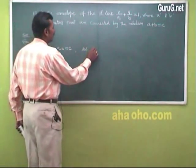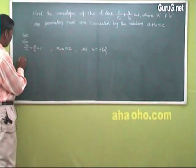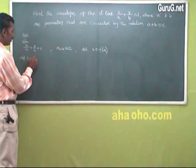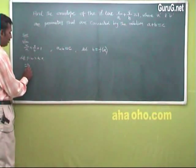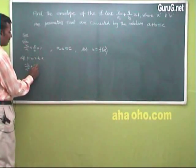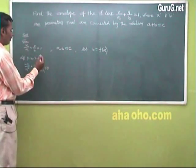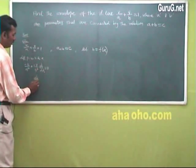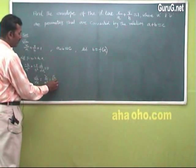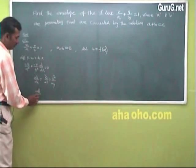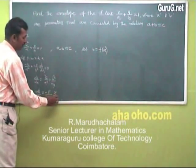Let b be a function of a. Differentiate partially with respect to a: minus x/a² + (minus y/b²)(db/da) = 0. So db/da = (x/a²)(b²/y) = minus b²/a² · x/y. This is equation 1.